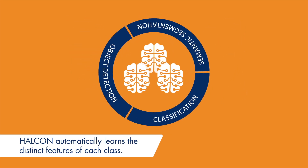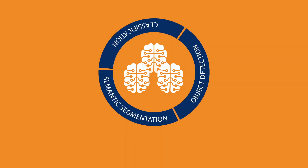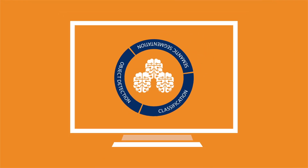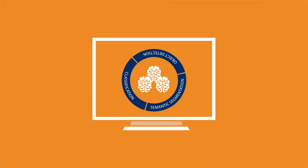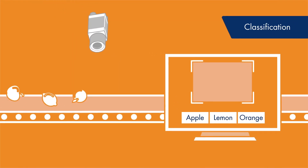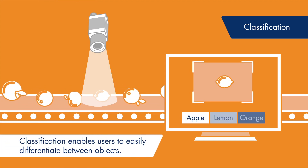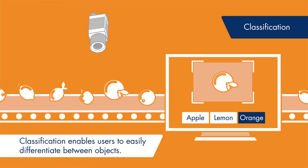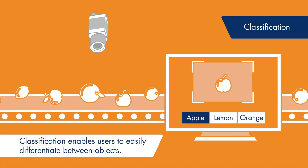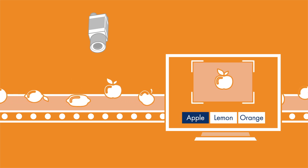This is a big advantage compared to traditional classification methods, where these features had to be handcrafted by the user. Deep learning-based classification allows to easily differentiate between objects on a per image basis. The low labeling effort enables particularly short setup times, and applying the classifier to new data is especially fast.